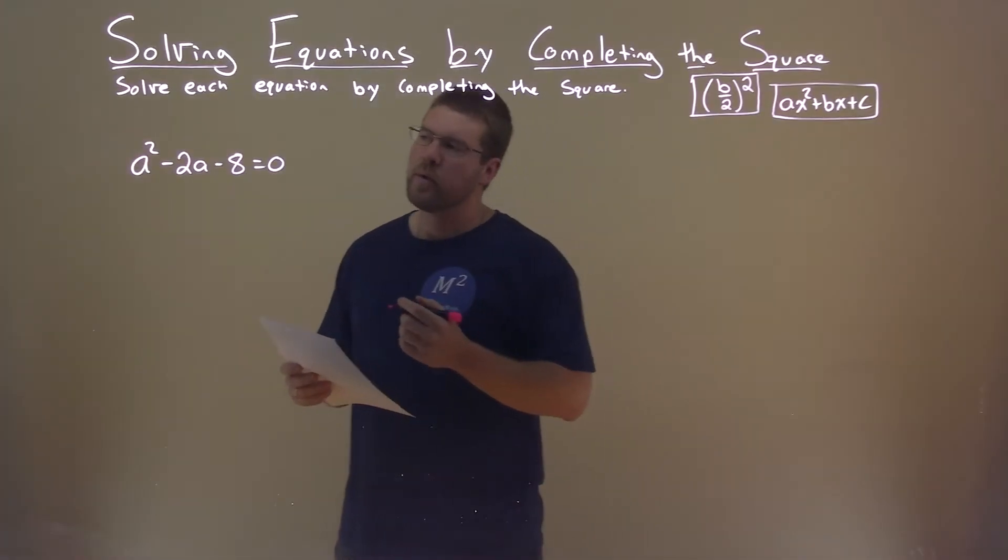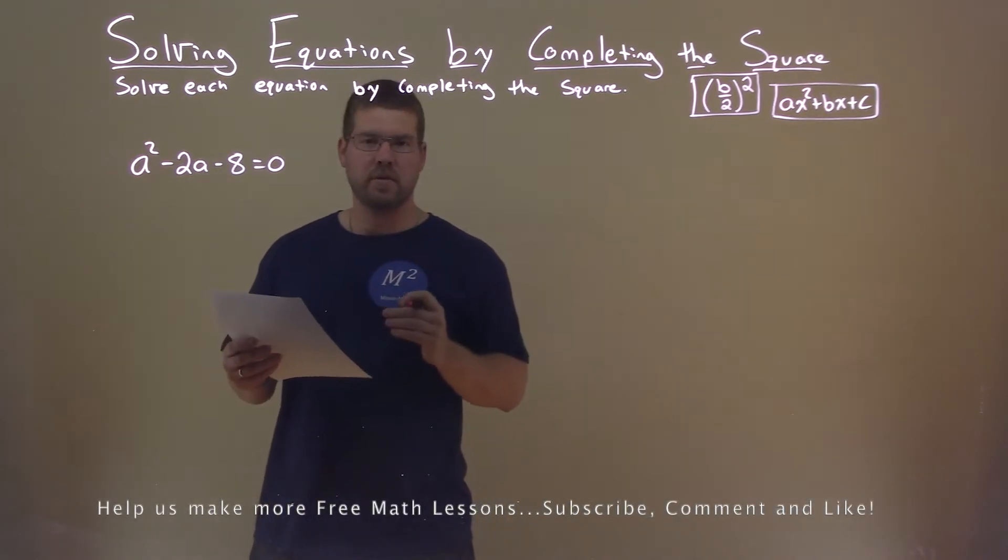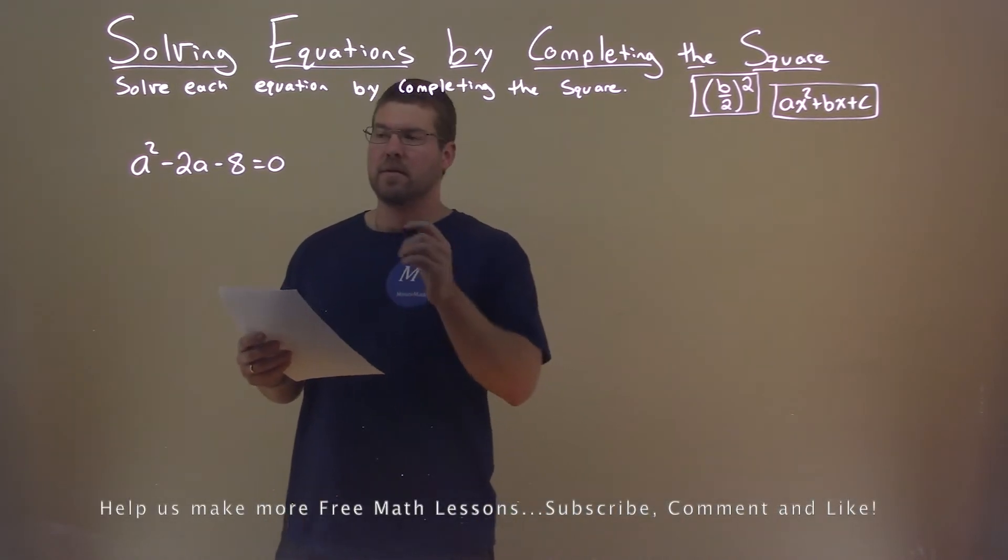We're given this problem right here, a squared minus 2a minus 8 equals 0, and we need to solve this by completing the square.